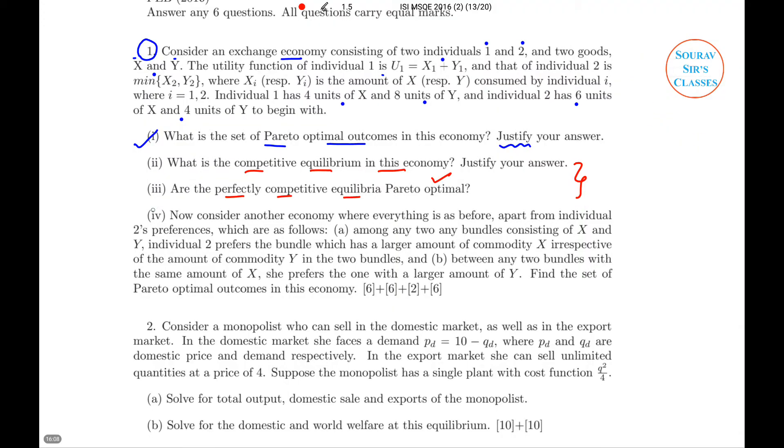Lastly, we move on to the last part of the question. This part 4 says, now consider another economy where everything is the same apart from individual 2's preference which are as follows: among any bundle consisting of X and Y, individual 2 prefers the bundle which has larger amount of commodity X irrespective, that means he doesn't care about the amount of commodity Y in the two bundles. And part B says, between any two bundles with the same amount of X, she prefers one with the larger amount of Y. Let us do part A first then we will move on to B. And in this we need to find out the set of Pareto-optimal outcomes.